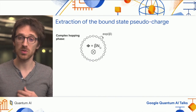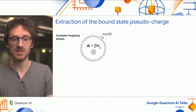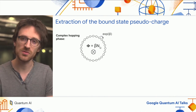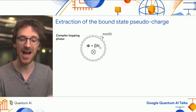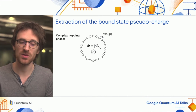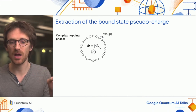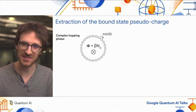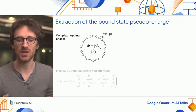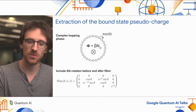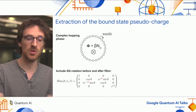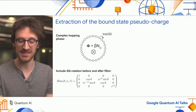We can push this even further by adding magnetic flux. In this type of system, magnetic flux amounts to adding a complex hopping term between sites. We can do this very easily by adding single-qubit rotations before and after the FSim gates, which amounts to having FSim gates that look like this.